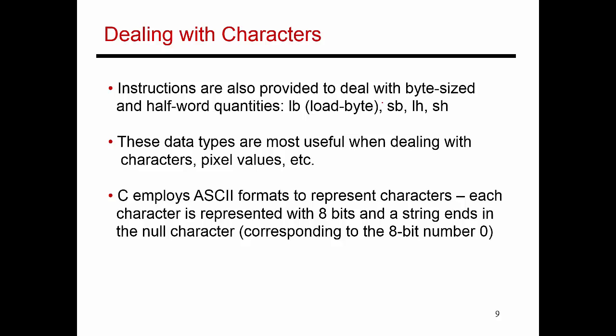So until now, almost every single example that we were discussing was dealing with integers. And integers are these four-byte entities. So I was always doing load word and store word, and I was adding up these integer values and so on. But characters are much smaller. So in C, every single character is represented with an ASCII format, which attributes eight bits or one byte for every single character. And there's a table in the textbook that shows you the ASCII format for every single character.